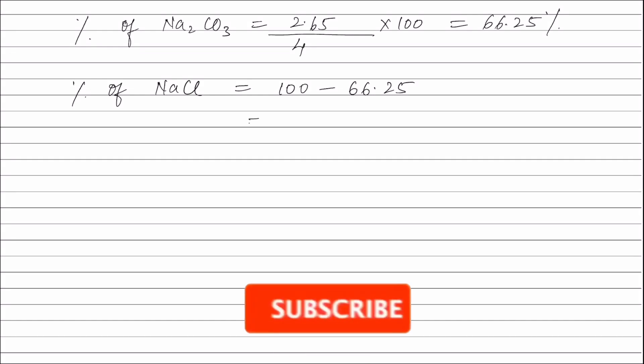Therefore, percentage of sodium carbonate is 2.65 divided by 4 times 100, which equals 66.25 percent. Percentage of sodium chloride is 100 minus 66.25, which equals 33.75 percent.